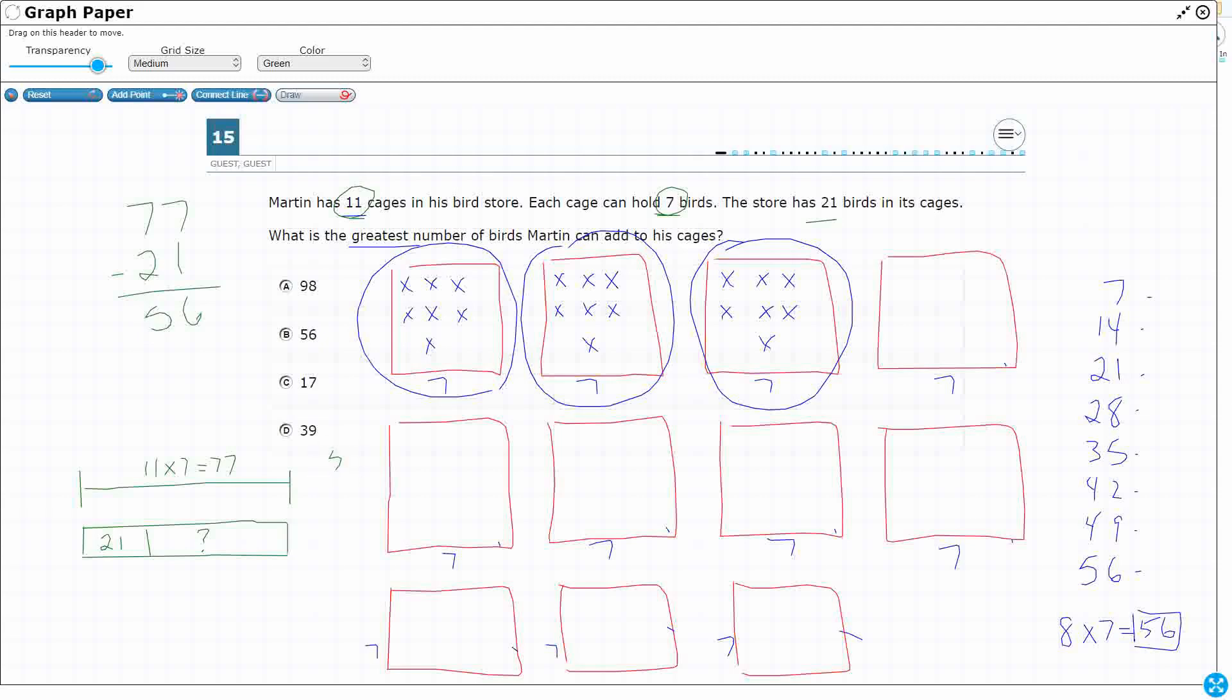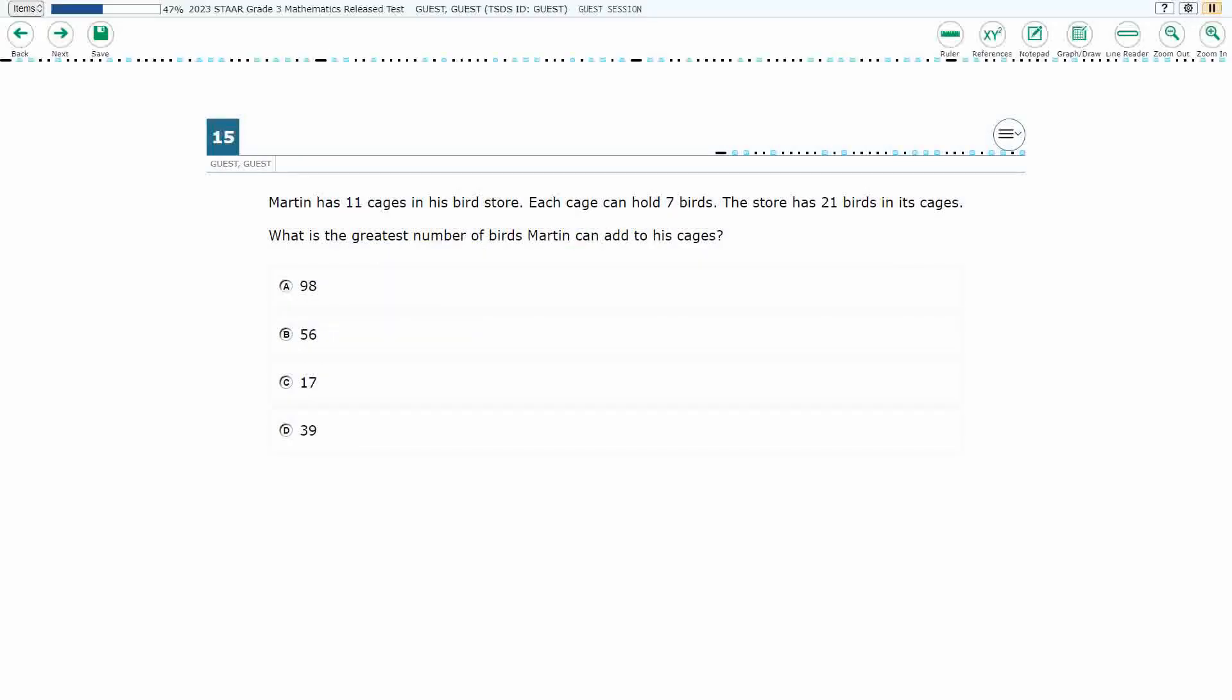If you wanted to add back up, just to double check, you're 56 plus the 21 that's already there. That is going to make 77, and that's the total number that I can add, because that's 11 times 7. All right, so my answer here is going to be B, 56.